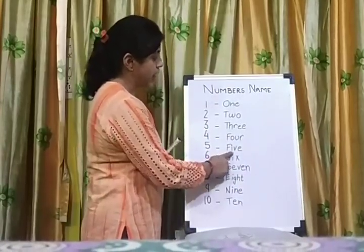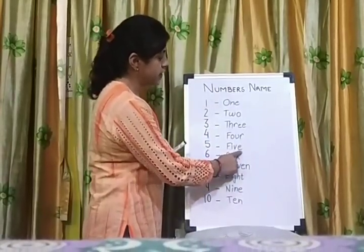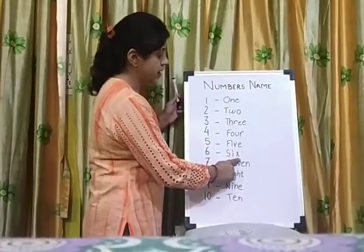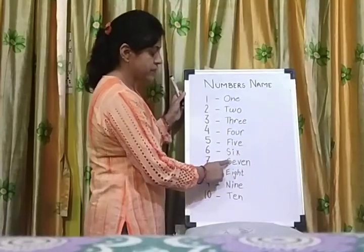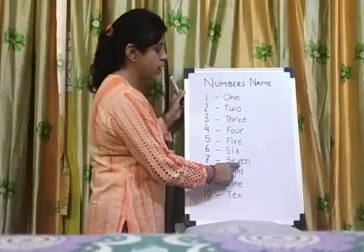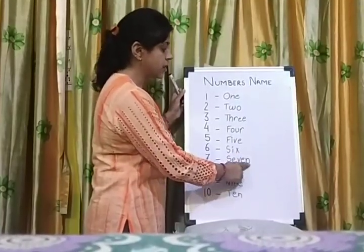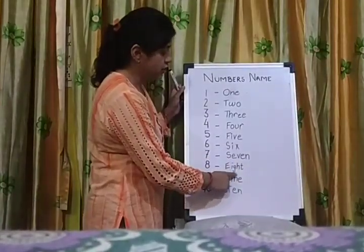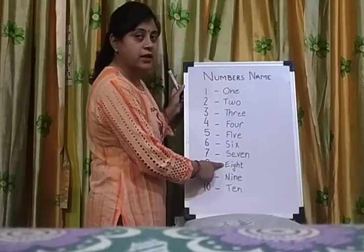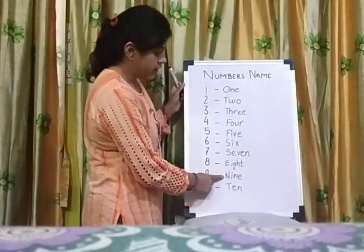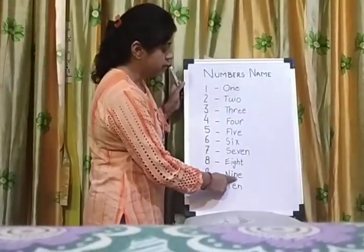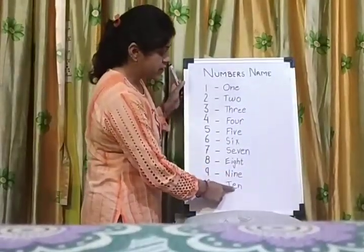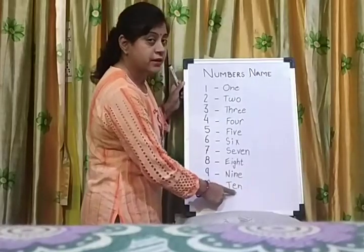F-I-V-E. Five. S-I-X. Six. S-E-V-E-N. Seven. E-I-G-H-T. Eight. N-I-N-E. Nine. T-E-N. Ten.